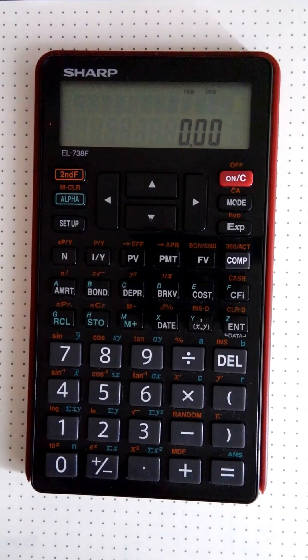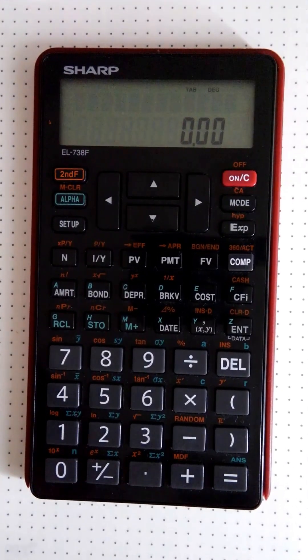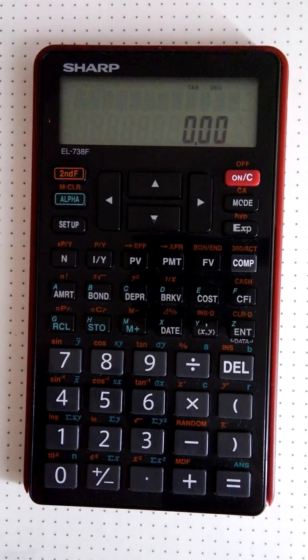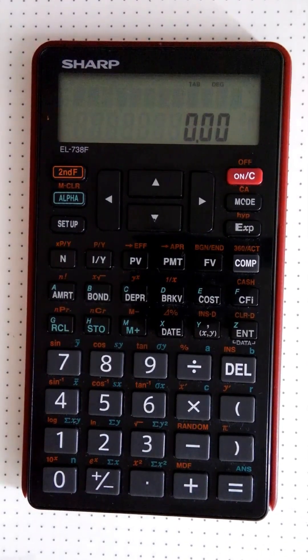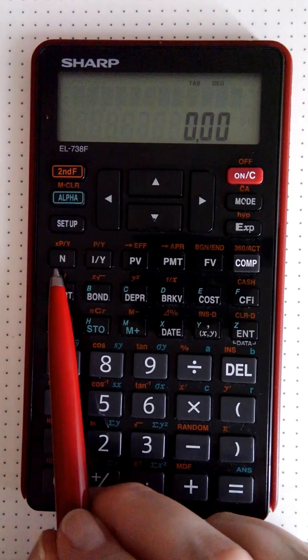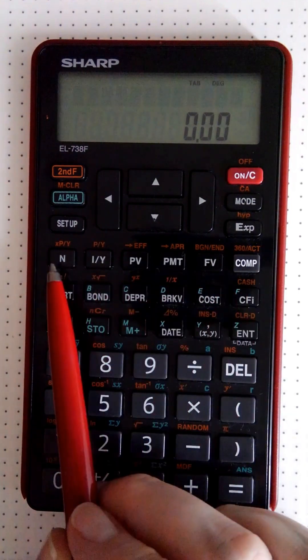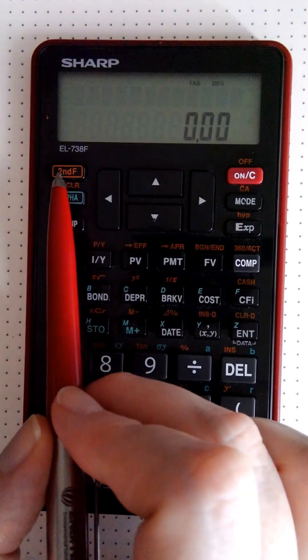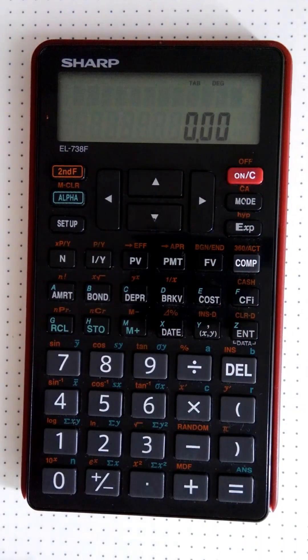Okay, so now we're interested in using our financial calculator to do compound interest calculations. For compound interest calculations, we're actually just interested in this row over here, and then our second function button and the CA button, which clears our data and not our variables.